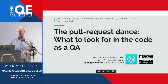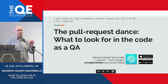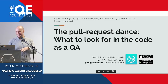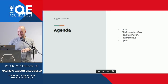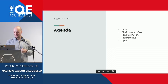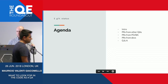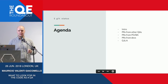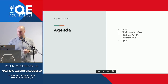I thought about talking about how I am a really annoying person reviewing code. So the agenda for today: some introduction, reviewing PRs of another QA, reviewing PRs from a business analyst or a PO — yes, that happens — and reviewing PRs from other devs, and then questions and answers.